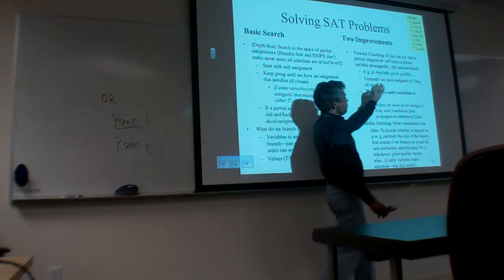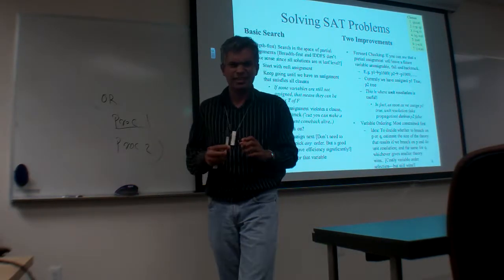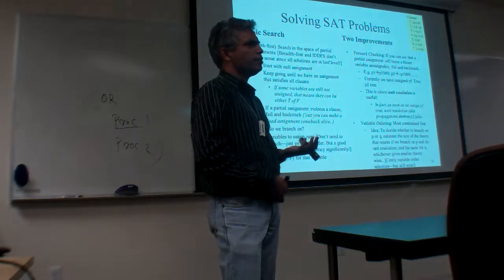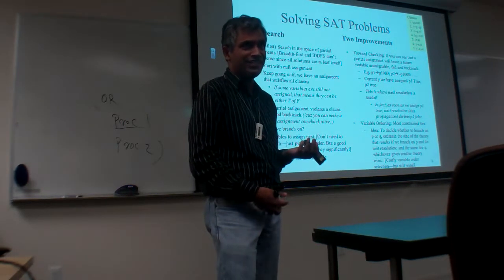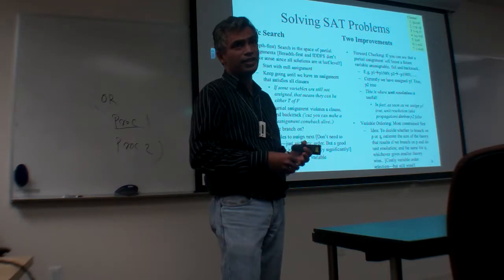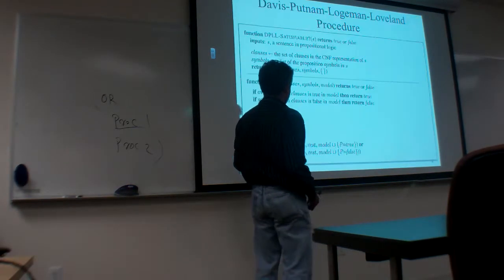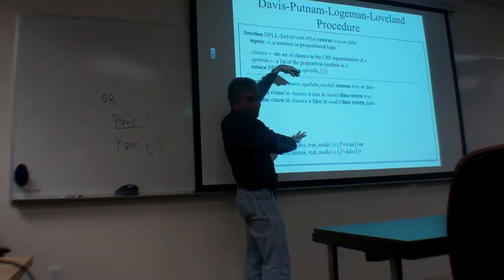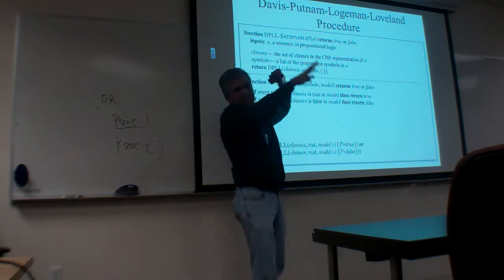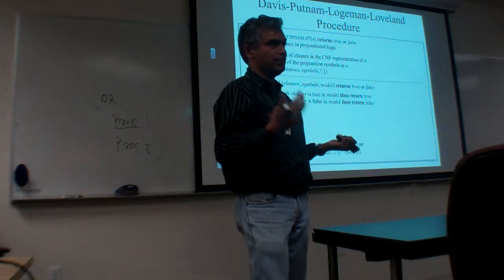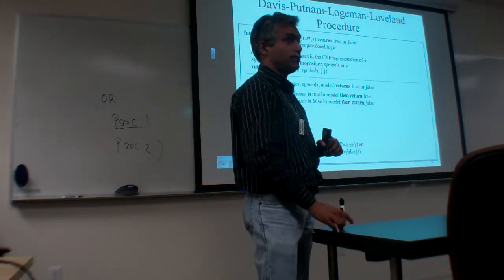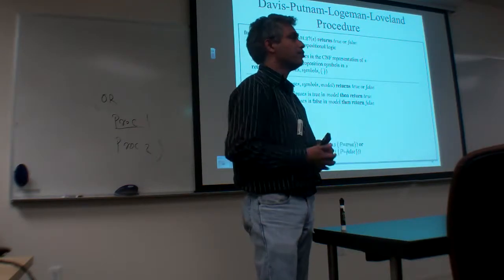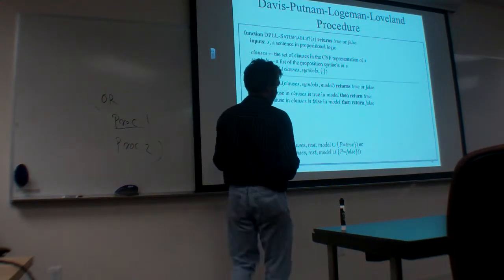I want to do two improvements to this algorithm. There are entire conferences devoted to improving SAT solvers. What I showed you is just a piece of the 1962 algorithm — they wouldn't have gotten a JACM paper for just that. They did two more things I'll talk about in a minute, which are kind of cute ideas. But there are 10,000 additional ideas developed for improving SAT efficiency right now.